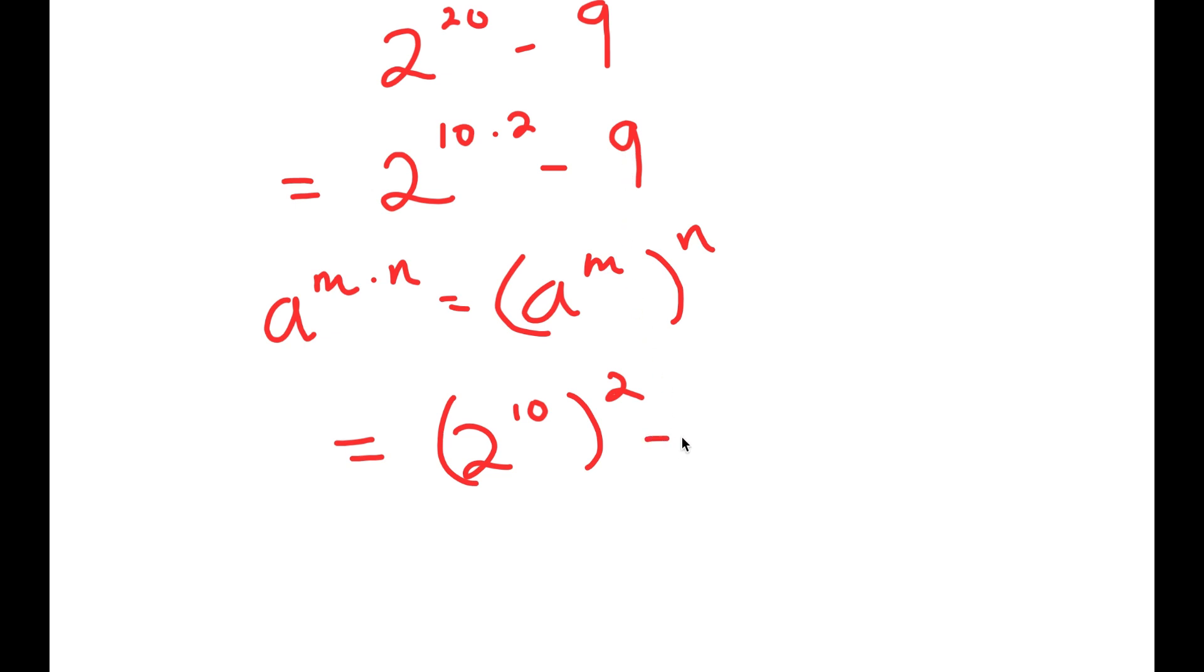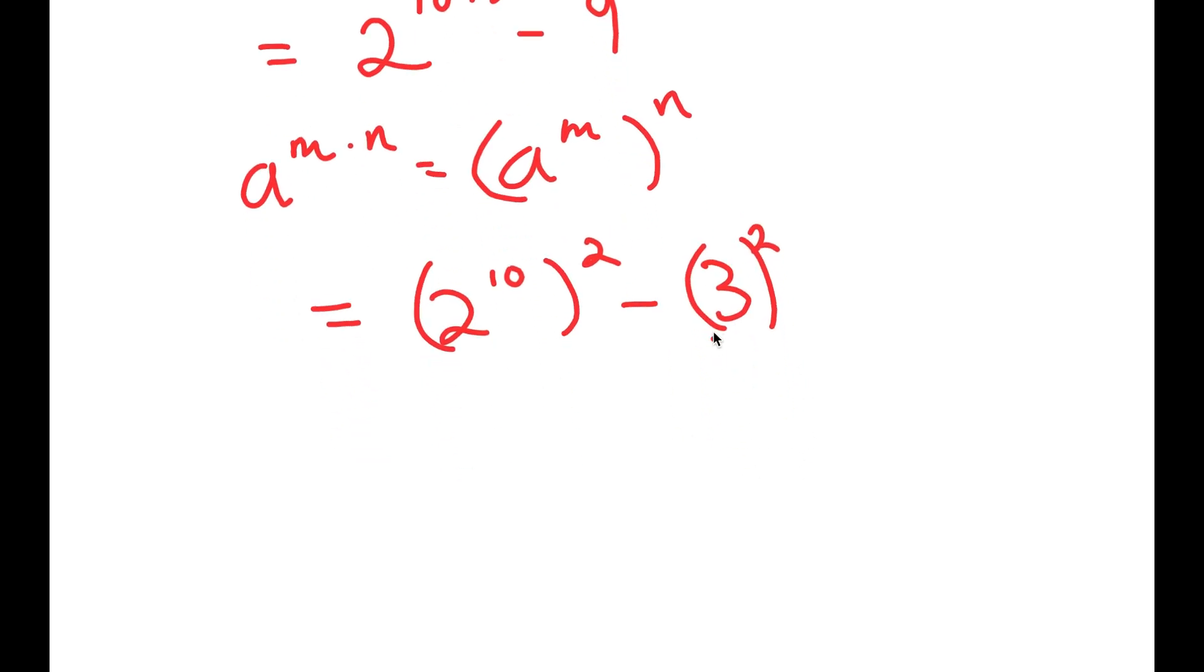And now 9, I'm going to rewrite as 3 squared. So now I can use the property a squared minus b squared is equal to a plus b times a minus b.